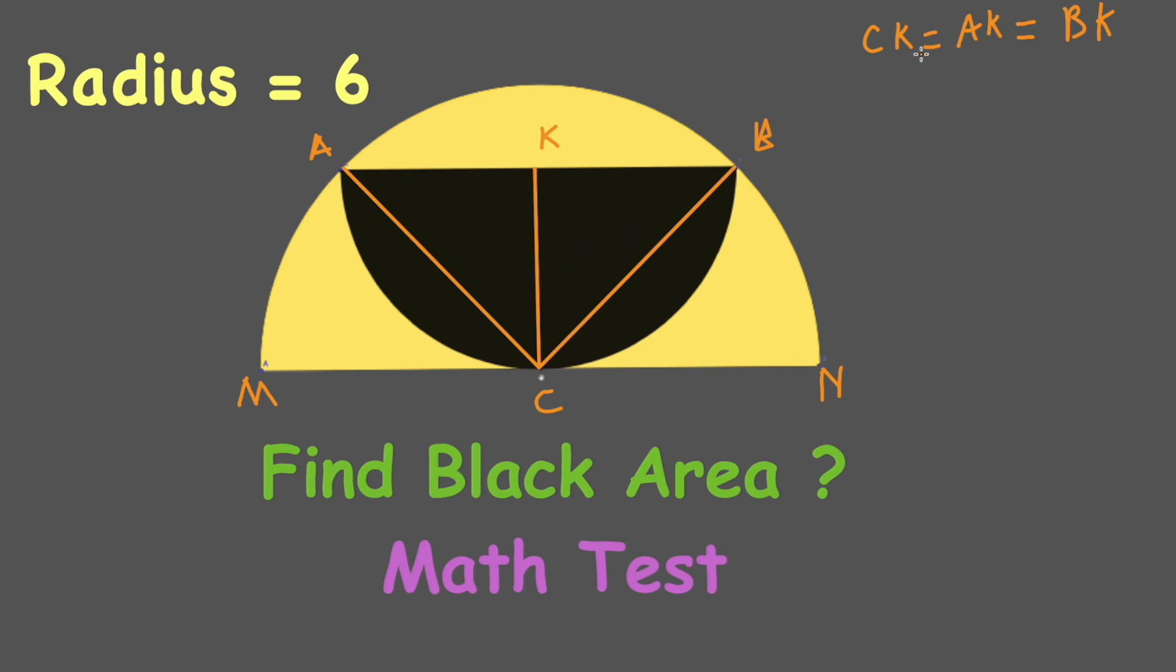So then we have AC equals CB, which equals the radius of the yellow semicircle, which is 6. Using the Pythagorean theorem, we have CK² plus KB² equals CB². Since CB is 6, CB² is 36.